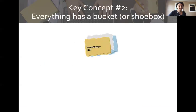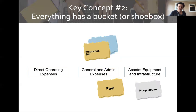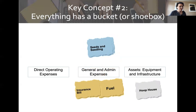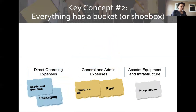Concept number two in setting up your bookkeeping system is that everything has a bucket. Think back to the old days of shoe boxes for receipts — one shoe box for utility bills, one for mortgage payments, one for insurance. The same is true in our bookkeeping system: we want different buckets or accounts to record the different types of transactions.